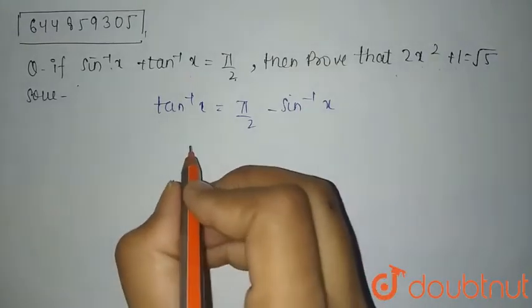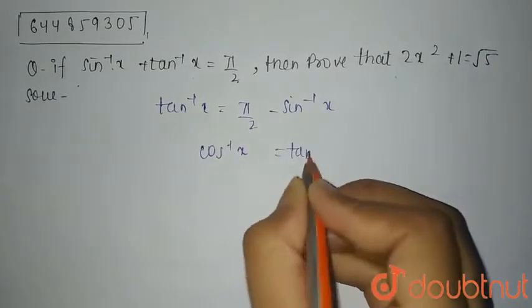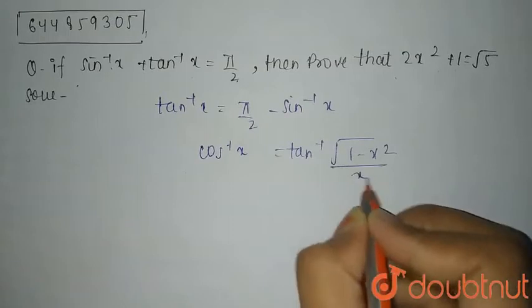So what is cos inverse x? Cos inverse x can be written as tan inverse of root 1 minus x square divided by x.